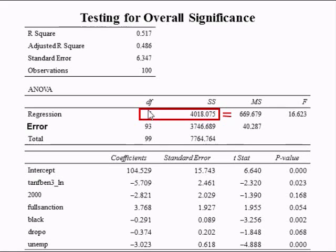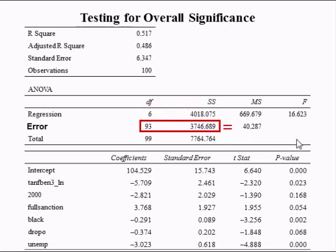We have six variables — 1, 2, 3, 4, 5, 6 — so the degrees of freedom for the sum of squares due to regression is 6. The mean square due to error is found by taking the sum of squares due to error divided by its degrees of freedom, which is 93.